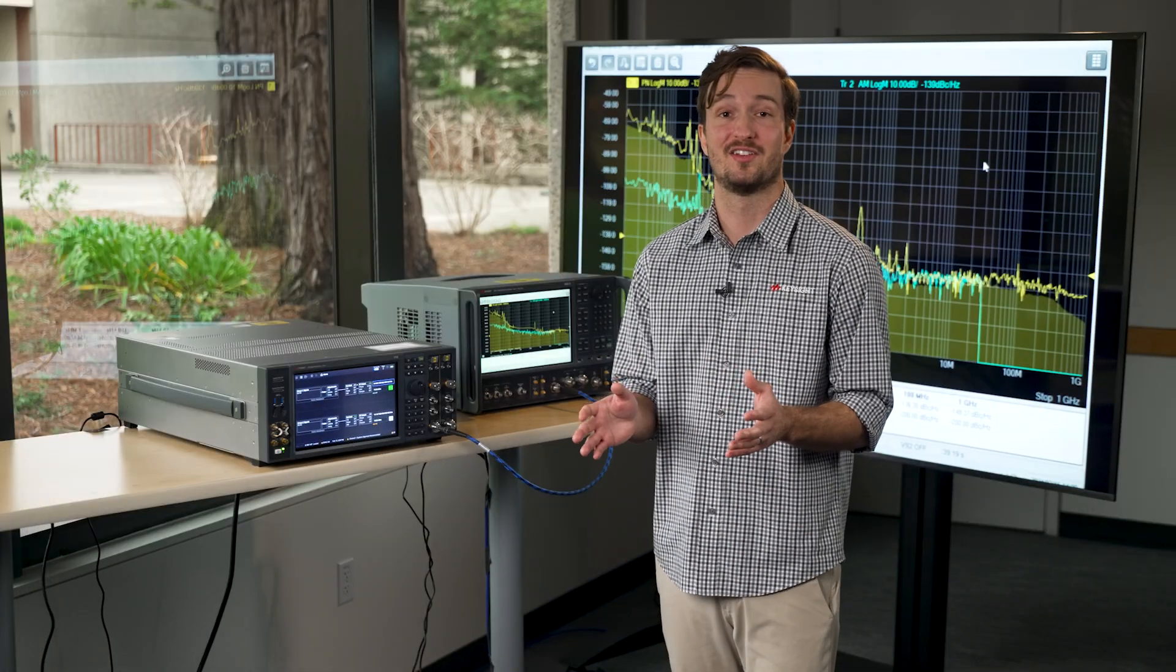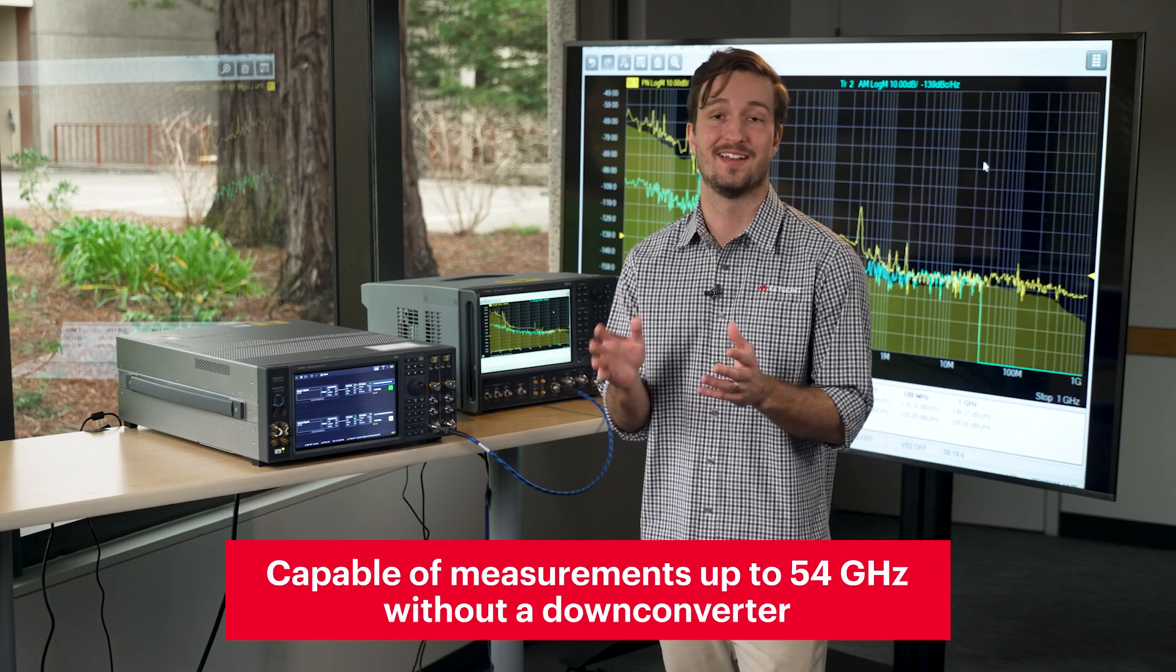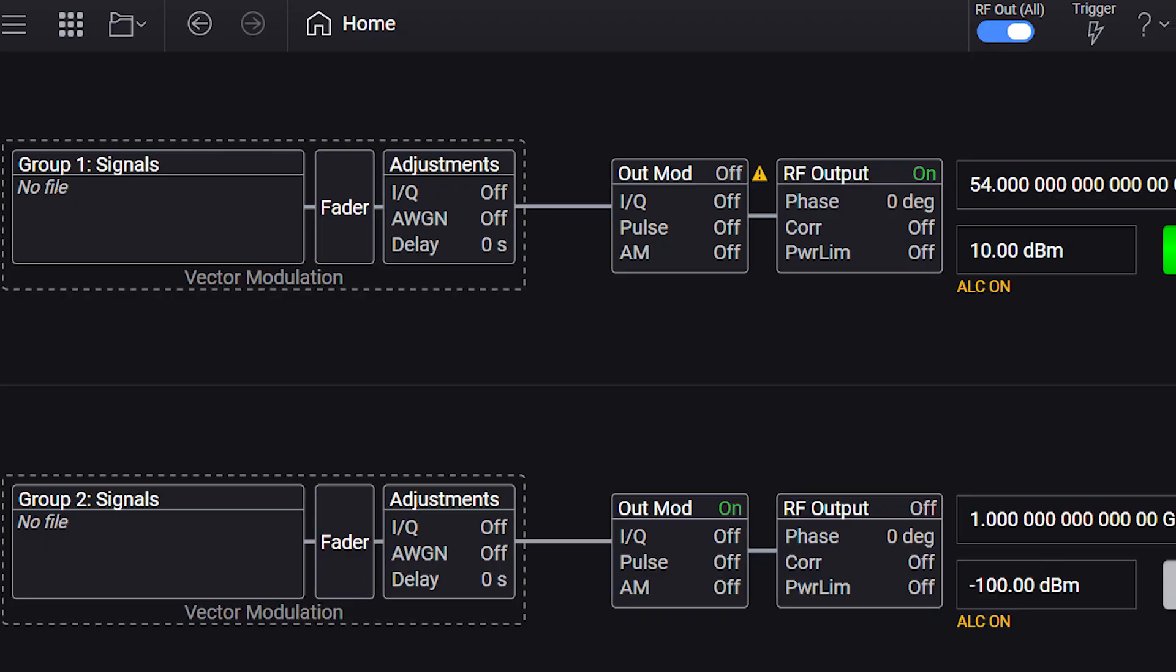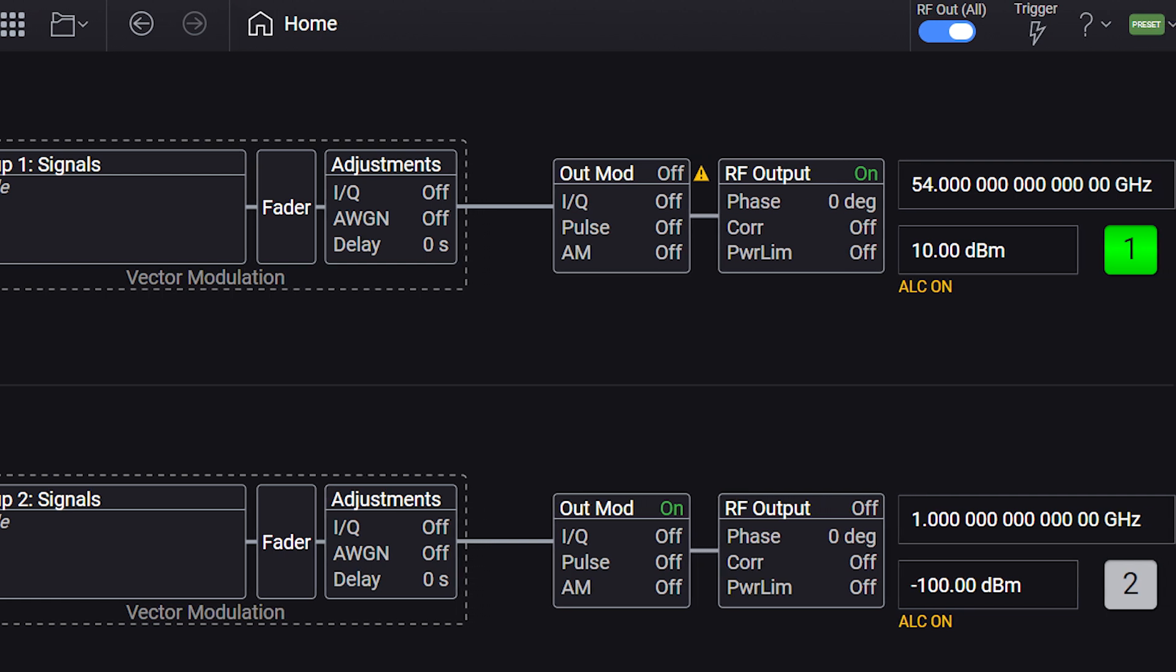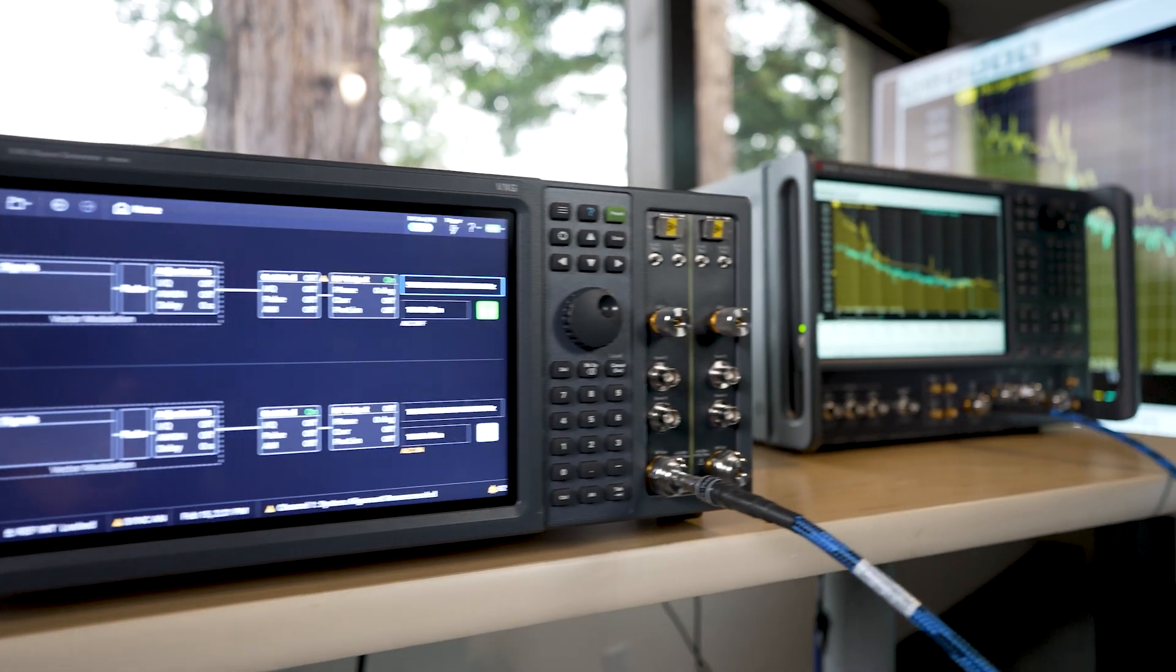The new SSA-X can now make measurements up to 54 gigahertz without a down converter. We've configured the VXG to output a CW at 54 gigahertz and have directly connected it to the SSA-X receiver input.